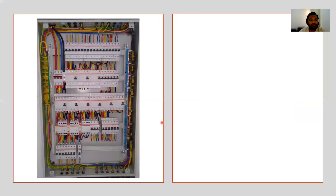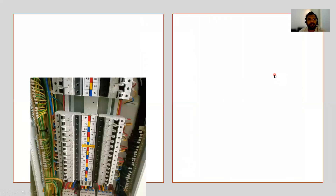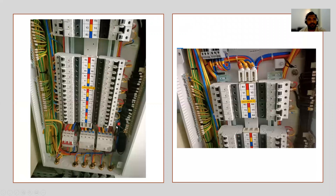In the UAE, Abu Dhabi and Dubai have two different distribution board regulations. In Dubai, a typical distribution board is shown here. In Abu Dhabi, there are two types: one with a main incomer, outgoing circuits, and RCBOs; and another with a main incomer, two ELCBs, and MCBs arranged in two sections.